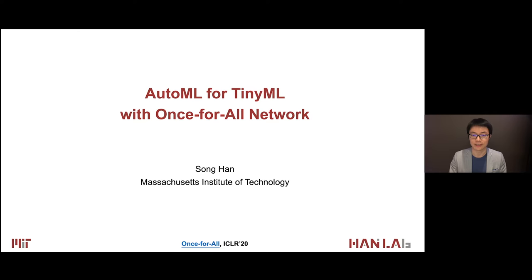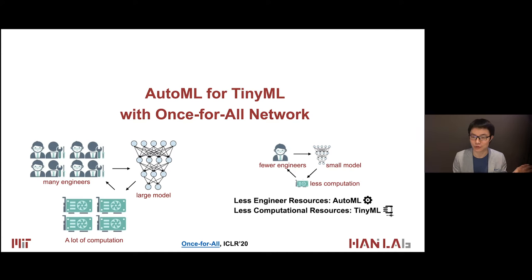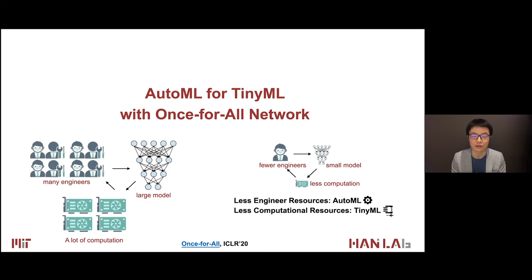Training and deploying deep neural networks require many engineers. The model is difficult to tune, especially to make it efficient and compact. The model is usually pretty large to achieve very good accuracy, and thus it requires a lot of computation, making it very difficult to be deployed on embedded devices. The goal of this project is to make AI more efficient with less engineering resource by AutoML and less computational resources to achieve TinyML, so the whole pipeline will require fewer engineers and produce smaller models for edge devices.